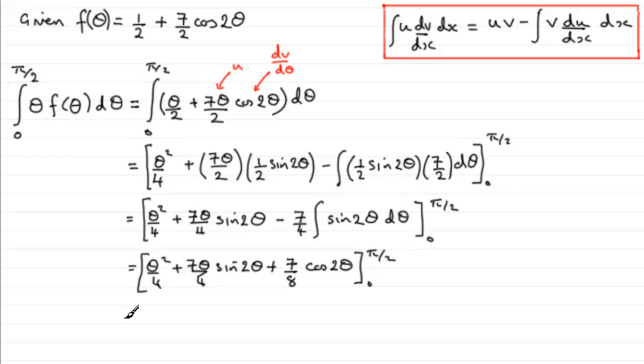So we just need to substitute our values in, starting with pi upon 2. So here we've got a quarter multiplied by pi upon 2 all squared. So let's just put that in pi upon 2 all squared. And then when we put pi upon 2 into here, I always think of pi upon 2 radians then as 90 degrees. So I'm looking at the sine of 180 degrees or pi radians. And that is 0. So this term is going to be 0. So we just put plus 0.